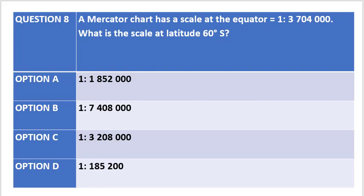Question 8 states that a Mercator chart has a scale at equator equal to 1:3,704,000. What is the scale at a latitude of 60 degrees south? The options are as indicated.